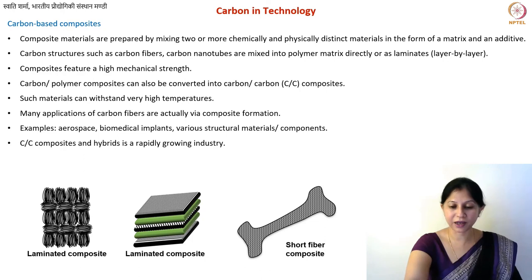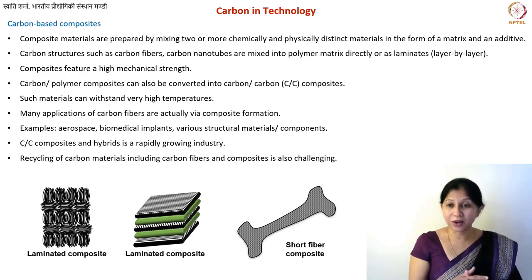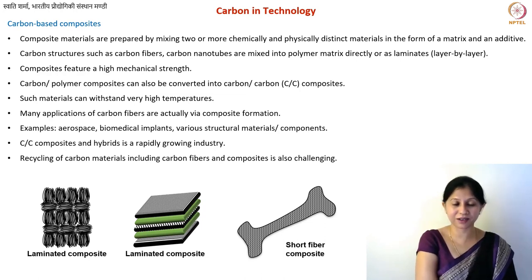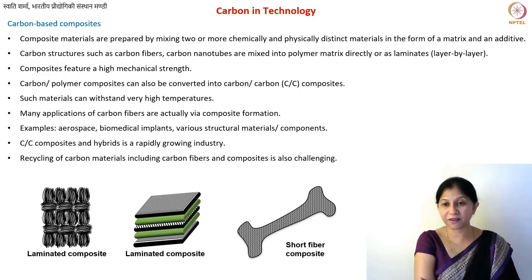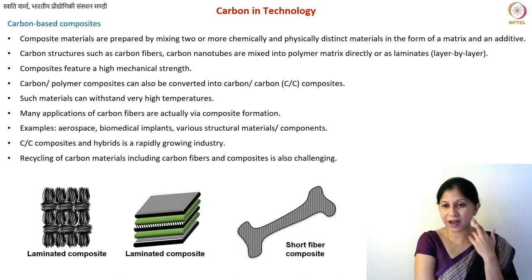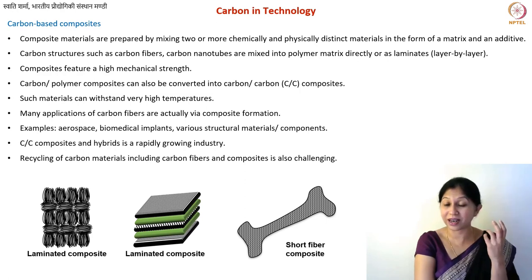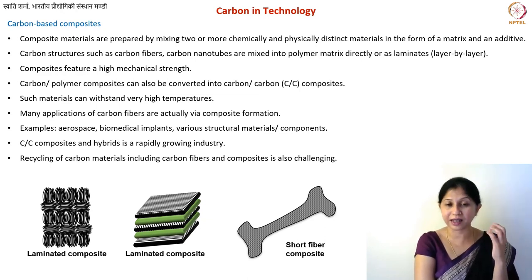Carbon fiber reinforced plastics, commonly known as CFRP, is carbon fiber mixed inside a polymer matrix — either short fiber or laminates. One challenging thing: just as I mentioned taking care of the environment when doing carbon manufacturing, when it comes to carbon fiber based manufacturing it is important to be able to recycle these carbon fibers. Glass fibers are still used for many applications partly because they are easier to recycle. In the case of carbon fibers it's slightly more difficult because carbon is very stable and does not degrade easily, and it is not possible to melt carbon.